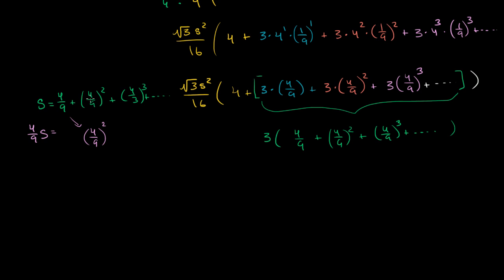If I take the second term and multiply it times 4/9, I'm going to get (4/9)³, and we're going to go all the way to infinity. So this is interesting. When I multiply 4/9 times S, I get all of the terms here except for this first 4/9.